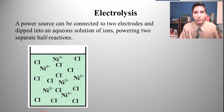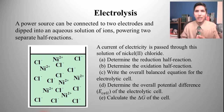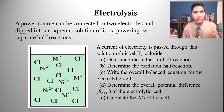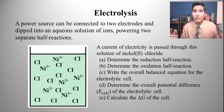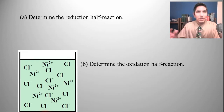Here's the question: a current of electricity is passed through this solution of nickel-2 chloride. We have five parts. Determine the reduction half-reaction. Determine the oxidation half-reaction. Write the overall balanced equation for this electrolytic cell — we call it electrolytic because it's electrolysis taking place with an outside power source. Part D says determine the overall E cell, the overall potential difference of this cell. And part E says calculate the delta G of the cell. So we start at the beginning.